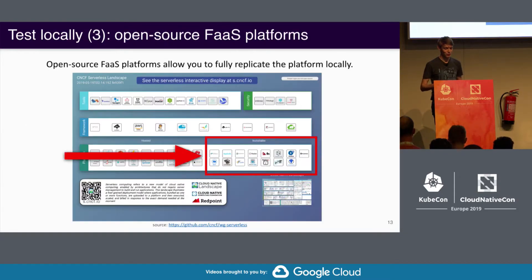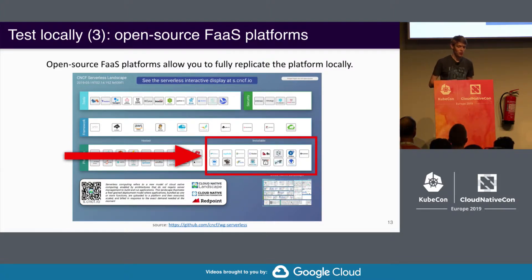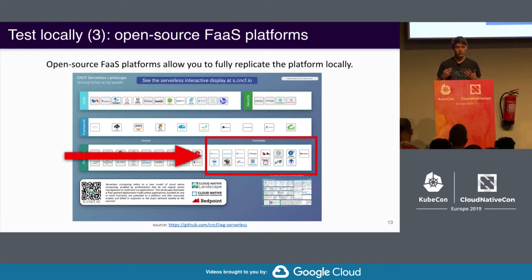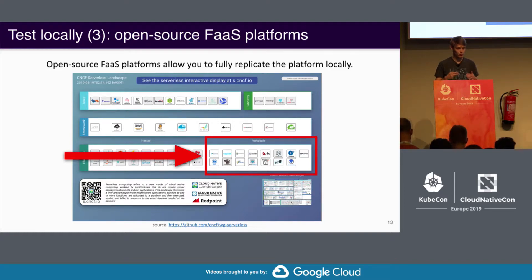The third option is using an open source FaaS platform. That does restrict you a bit in what you can choose, but the advantage is — as the name says — you can deploy them anywhere. You can deploy the exact same version in your production and in your development environment, basically keeping both in sync.